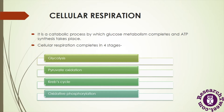Let's understand cellular respiration as an overview. It is a catabolic process, which means it generates energy, and the process is very important for generation of ATP. The process of cellular respiration completes in four stages: glycolysis, pyruvate oxidation, Krebs cycle, and finally oxidative phosphorylation.